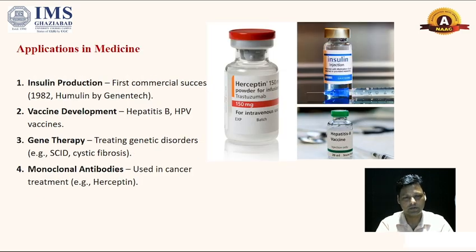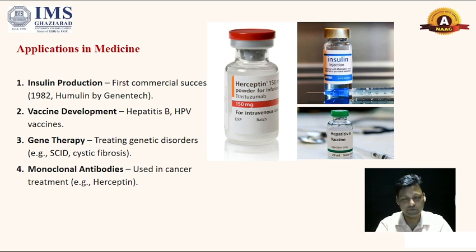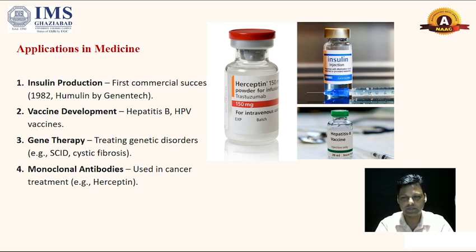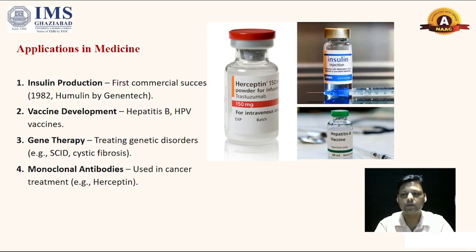Once we obtain those cloned DNAs or proteins, they are useful in medicine. For example, insulin was first commercially produced by Genentech in 1982. We have also developed vaccines, including HPV vaccines, and we are now treating genetic disorders like SCID and cystic fibrosis. We are also developing monoclonal antibodies for cancer treatment — for example, Herceptin for breast cancer.